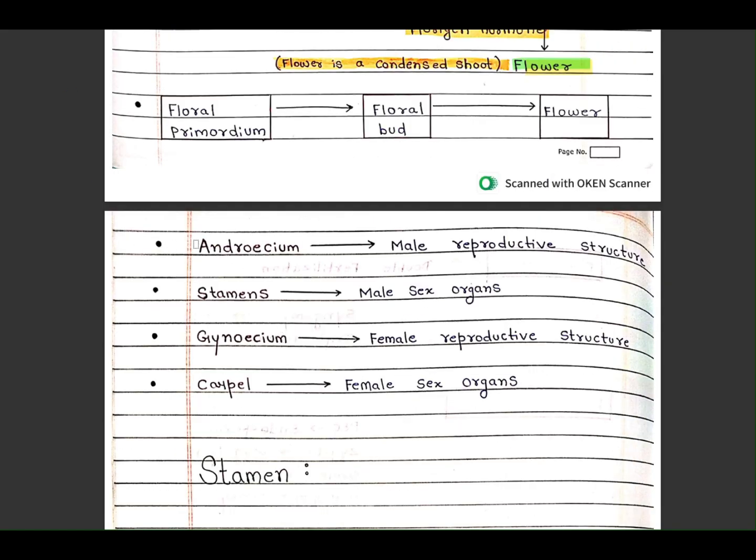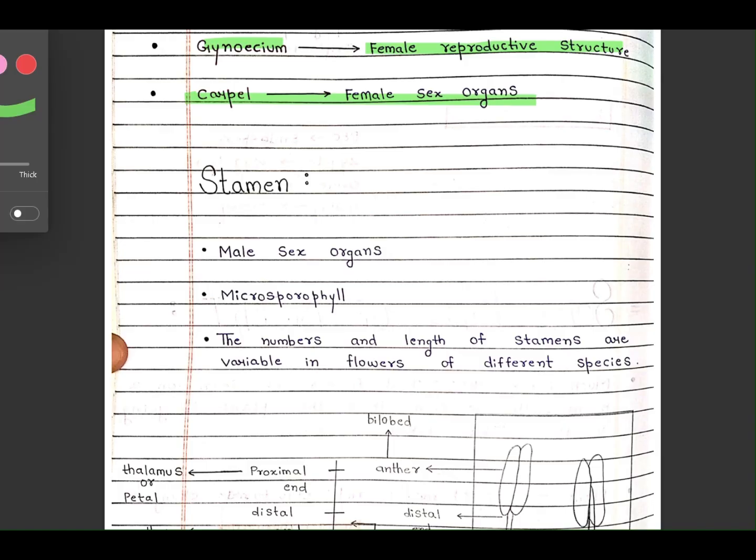As we have discussed previously, androecium is the male reproductive structure. Stamen is the male sex organ. Gynoecium is the female reproductive structure, and carpel is the female sex organ.